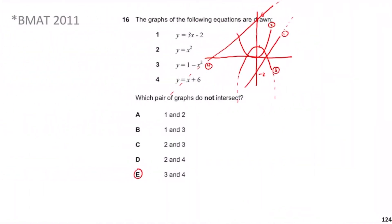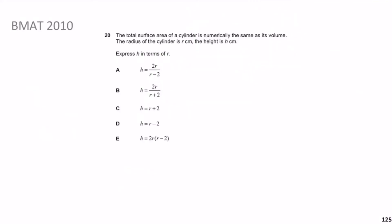Previously we looked at BMAT 2011 question 16 — which graphs don't intersect — really a question about sketching graphs and transformations. If any of those topics don't make sense, comment below and we can make a separate video. Now we move on to BMAT 2010 question 20: the total surface area of a cylinder is numerically equal to its volume; the radius is r and height is h. Express h in terms of r. Pause the video, give yourself a minute.